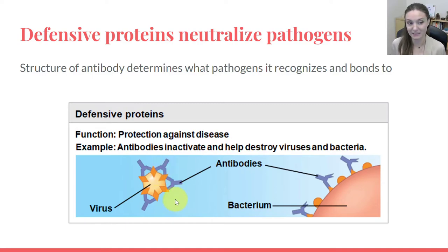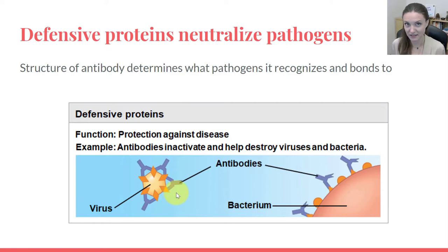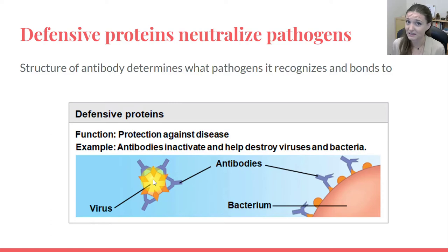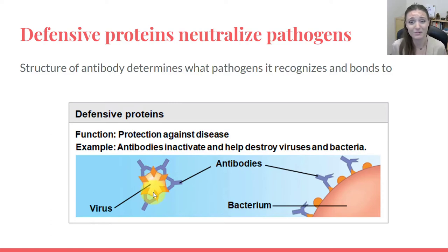These antibodies also prevent that virus or bacteria from getting inside our cells to reproduce. But again, it's dependent upon shape. If the shape of the antibody doesn't match up with the proteins on the surface of that virus or bacteria, it's not going to do anything — it won't bond to it and won't have any impact on it.